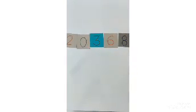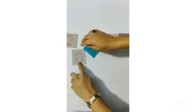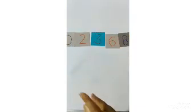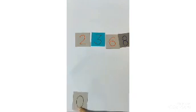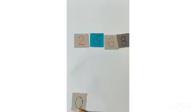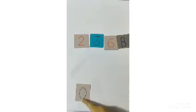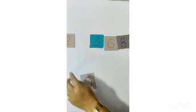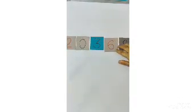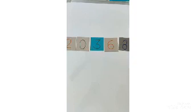Children always remember if you keep 0 first, then 0 doesn't have value kept in the beginning. It will become 2368 which is a 4 digit number. And we have to frame a 5 digit number. So we have to keep 2 in the beginning and then arrange 0 after that. So we got the correct 5 digit number which is 20368.